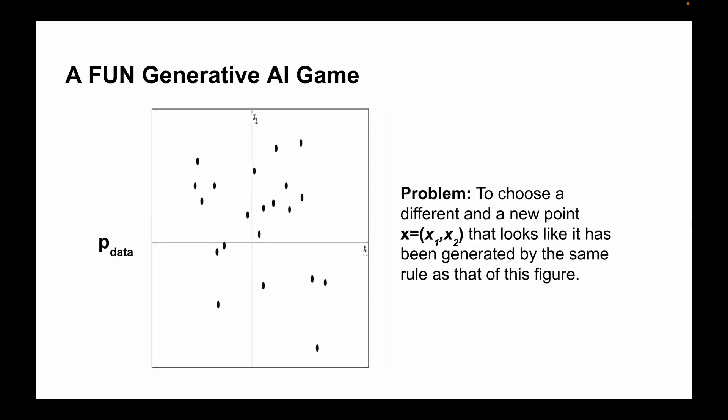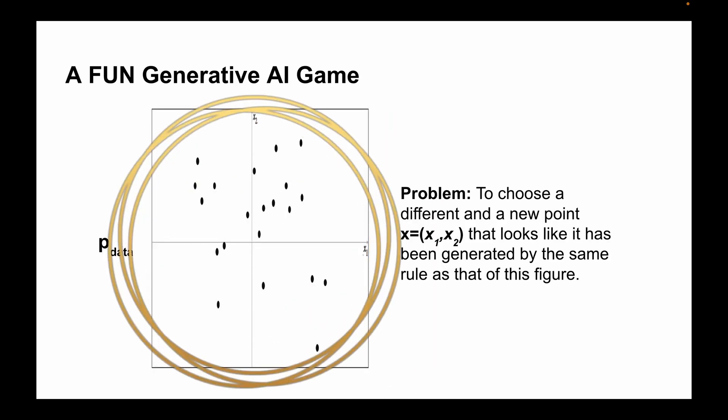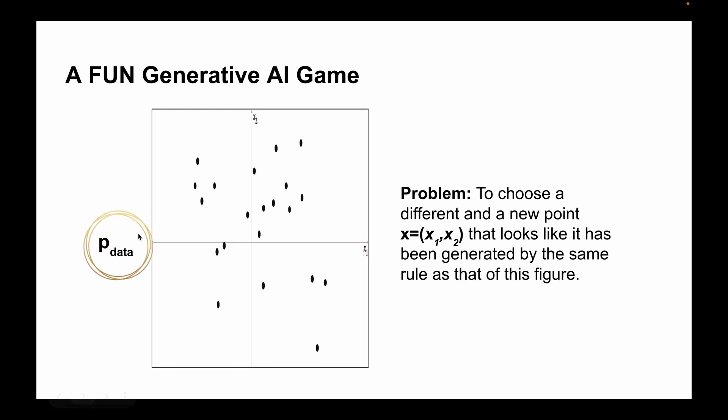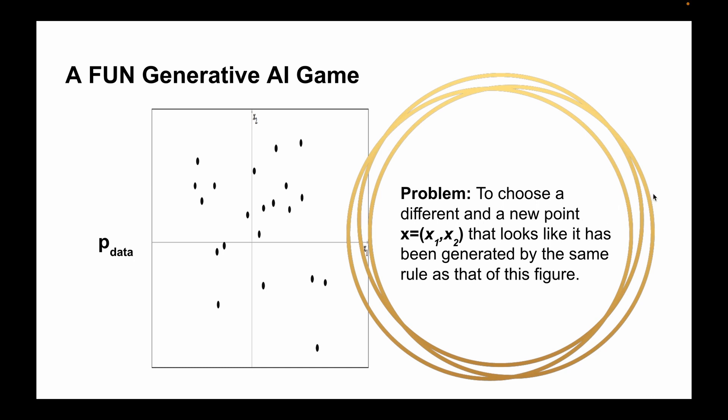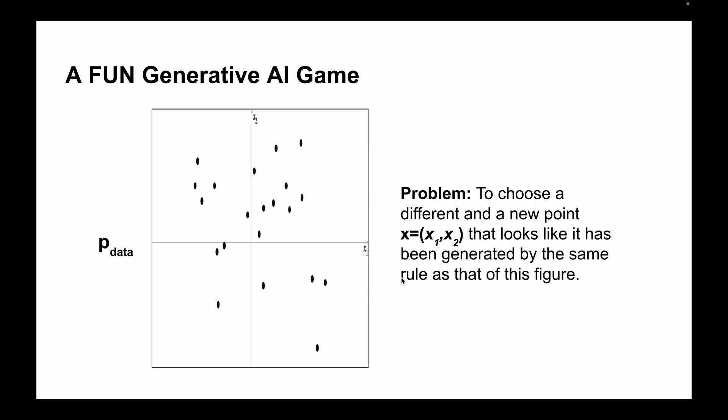Now let's play a fun generative AI game. Let's call this distribution pdata. The distribution that we are seeing on the screen in this figure, let's call it pdata. The problem is to choose a different and new point, X1 and X2, that looks like it has been generated by the same rule as that of this figure. You can pause this video for a few seconds and try to solve this problem.